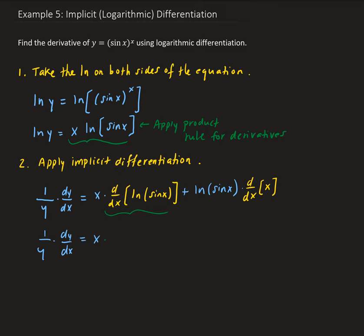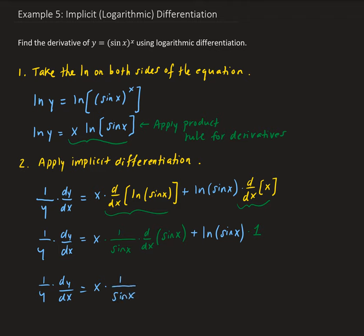The derivative of natural log u is 1 over u times u prime, where u is the argument. So we have 1 over sin x times the derivative of sin x — that comes from the chain rule — plus natural log of sin x times the derivative of x, which is 1. The derivative of sin x is cosine x, so we get 1 over y times dy/dx equals x times 1 over sin x times cosine x plus natural log of sin x.